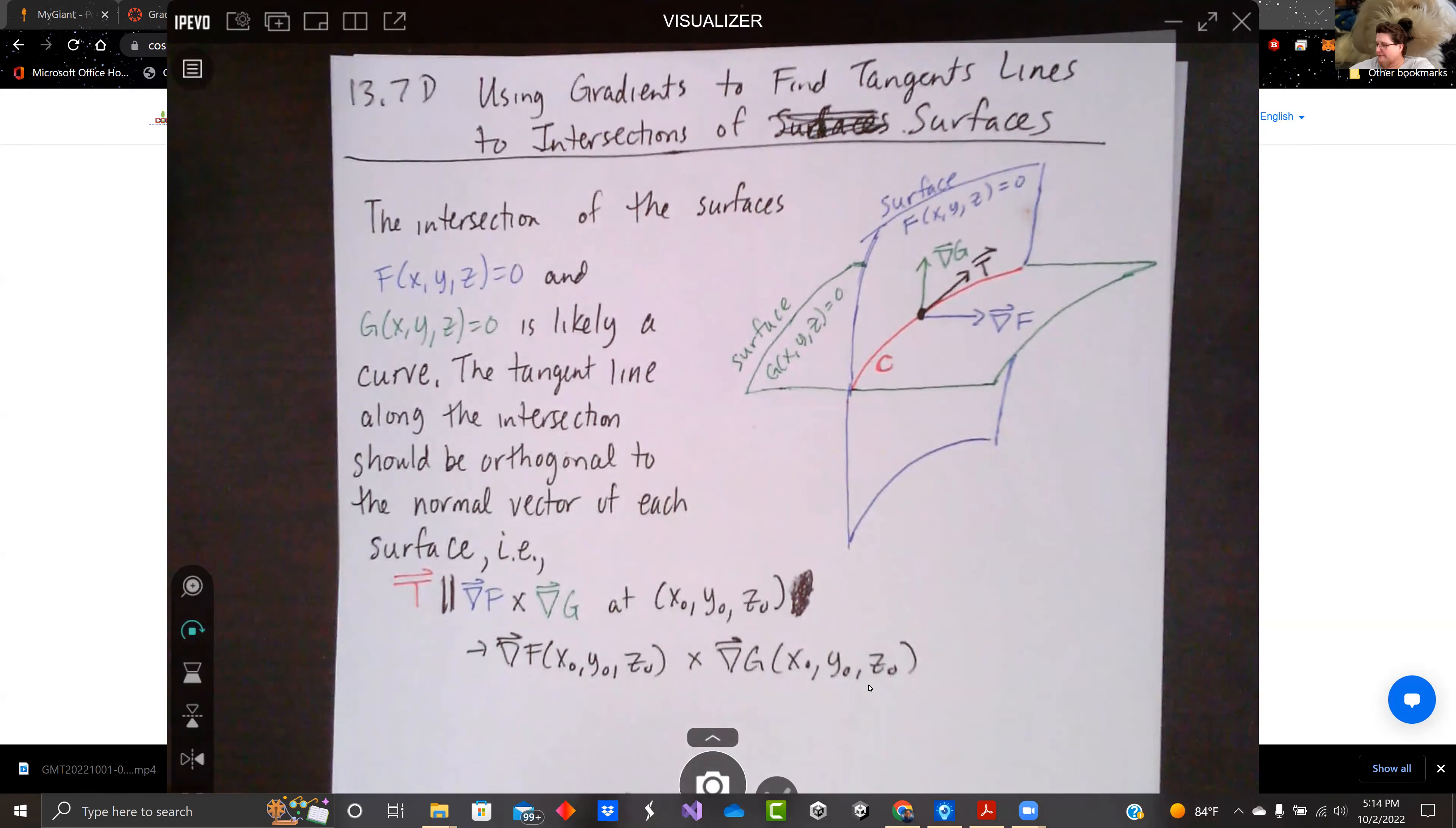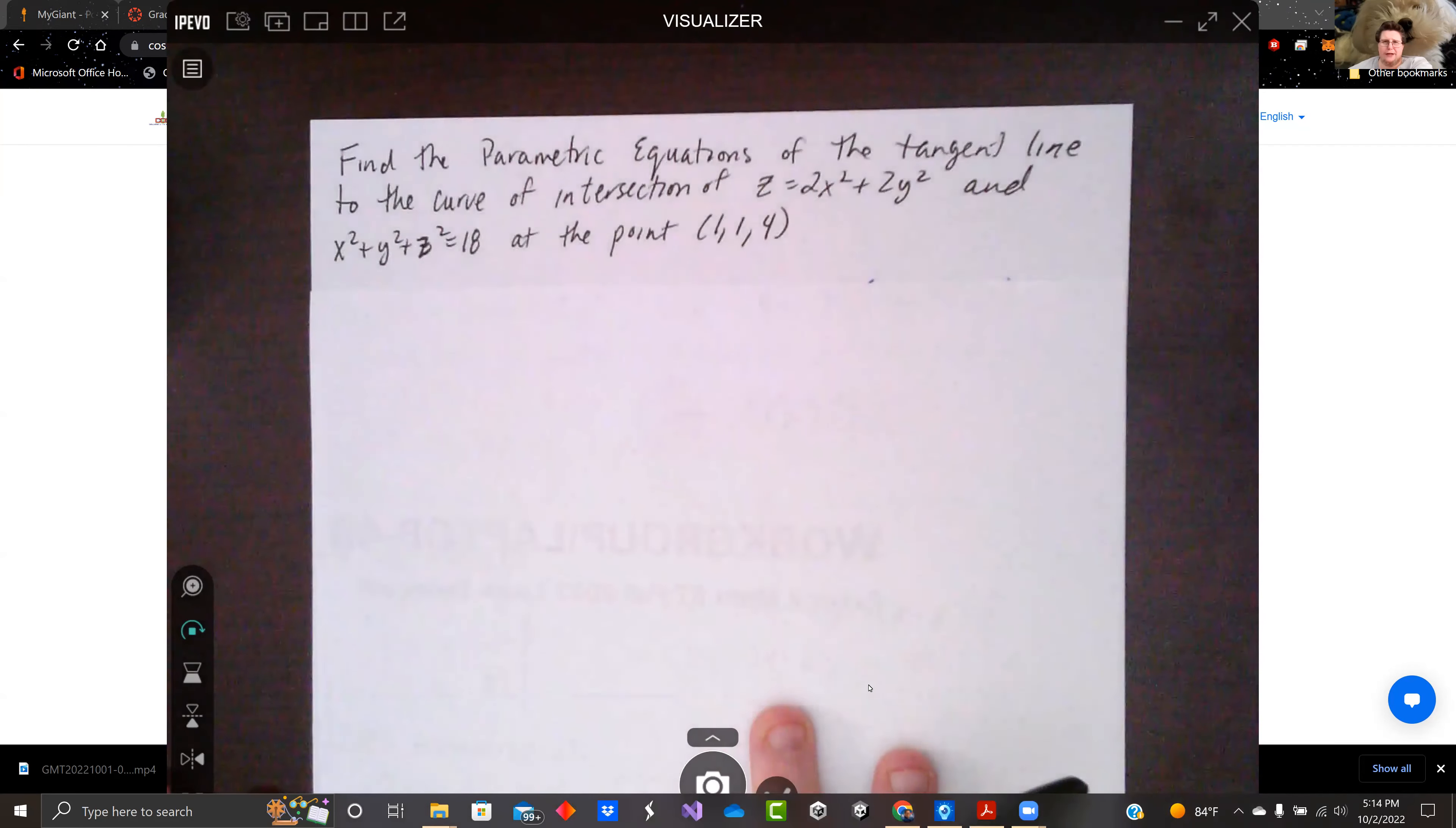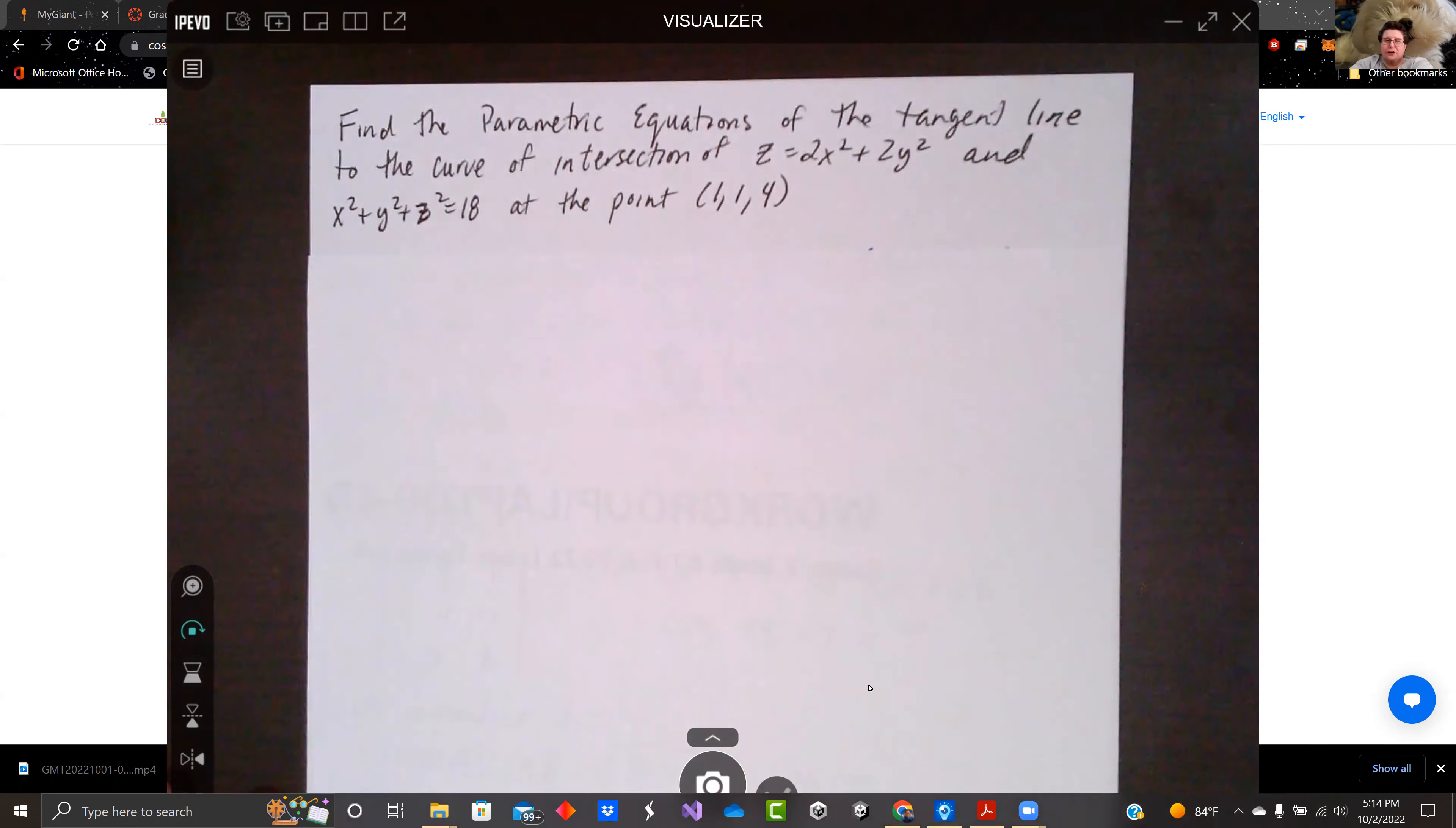So that's what we're going to do. Let's take a look at it in effect. We want to find the parametric equations of tangent line to the curve of intersection. We are going to use Z equals 2X squared plus 2Y squared for our first surface, and X squared plus Y squared plus Z squared equals 18 for our second surface. We're going to find the tangent line at the point (1,1,4).